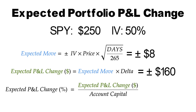If we divide this figure by our total account capital, we get the expected daily change as a percentage of our portfolio. Note that these calculations assume 265 trading days in a year, a constant delta, and a normal distribution of stock returns — these aren't the most realistic assumptions. Nevertheless, this is a great way to get a rough estimate for your daily portfolio P&L fluctuations. I highly recommend checking out my video on implied volatility to learn more about the expected move and IV.